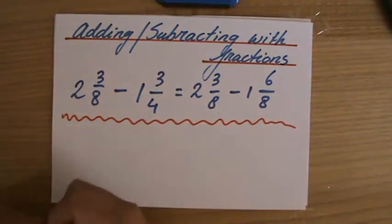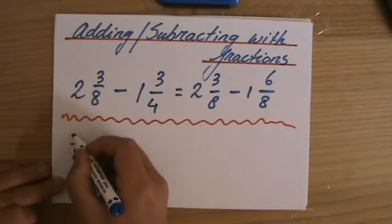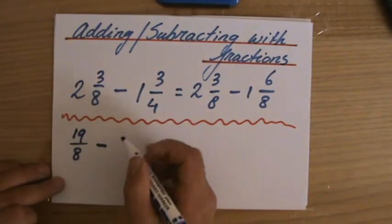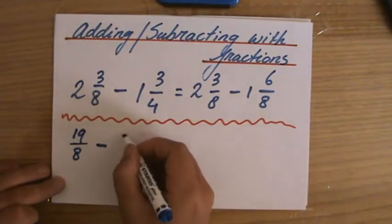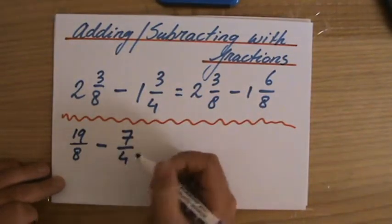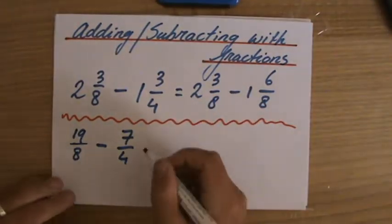Let's have a look. What did I say? I said, well, turn them into top-heavy fractions first. 2 3/8 is the same as how much over 8? 19/8 minus 1 3/4 is equivalent to 7/4. So first you convert them into top-heavy fractions.